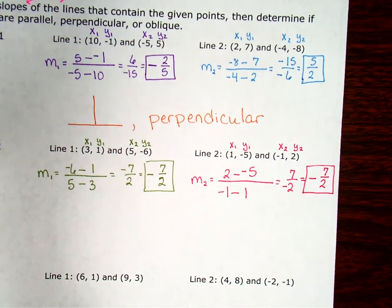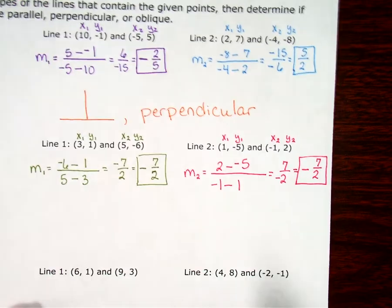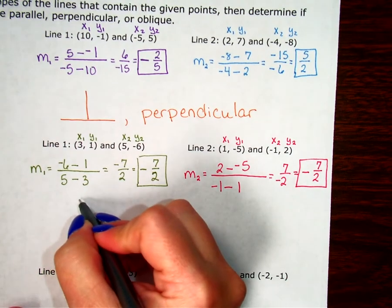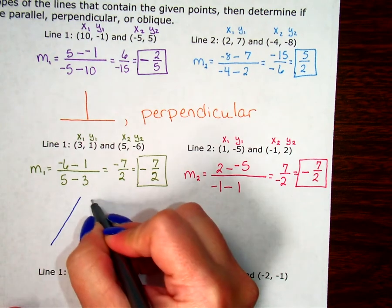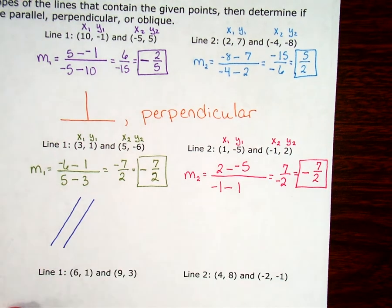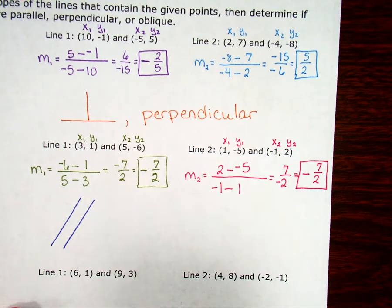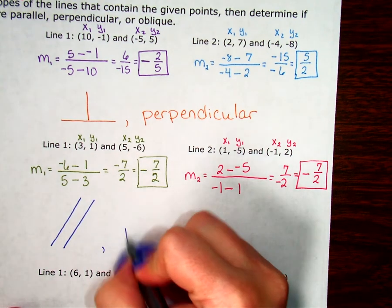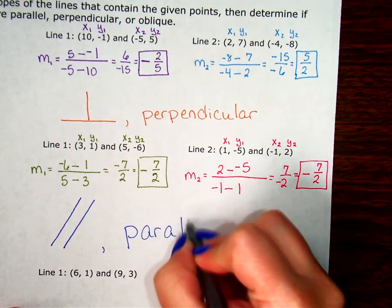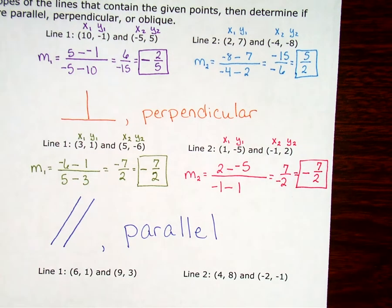So, if they're parallel, they're equal. Let's see. Negative 7 halves and negative 7 halves. Oh, yeah. They're both exactly the same. They're both negative 7 halves. So, this is parallel. The symbol for parallel just looks like that. Sometimes they'll be straight up and down exactly. Sometimes they're tilted like this. These are parallel.